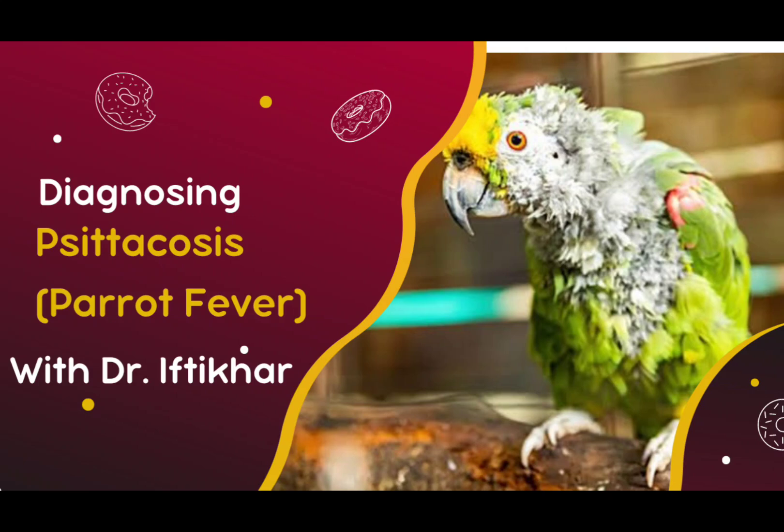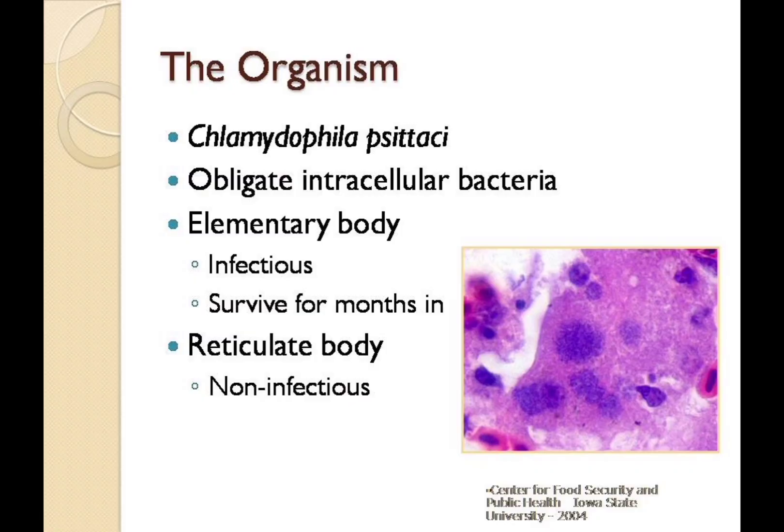When an avian is infected with Chlamydophila psittaci, the term avian chlamydiosis is used. The disease in avians is also known as parrot fever or ornithosis. Chlamydophila psittaci is an obligate intracellular organism. The developmental cycle includes two forms, the elementary and reticulate bodies.